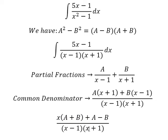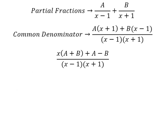Now we need to compare coefficients. We have 5x, so A plus B equals to number five. A minus B equals to negative number one. And now we create the system of equations.